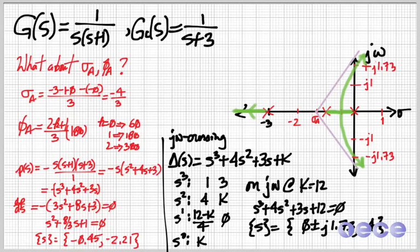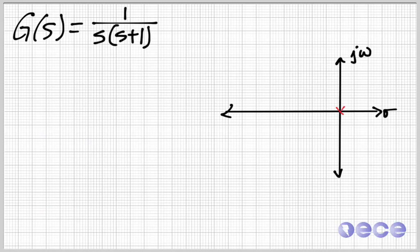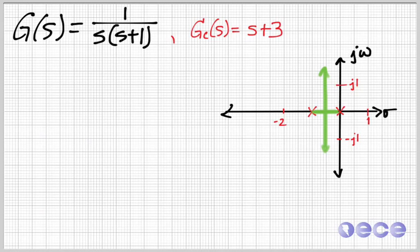So the downside here is that we wanted the system to be faster. I wanted to move everything to the left. But here, everything moved to the right by just adding a pole. So instead of just adding a pole, now I want to choose a compensator that's just a zero.